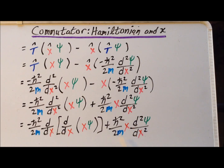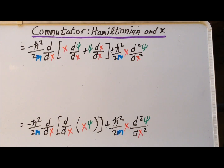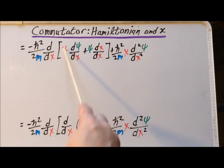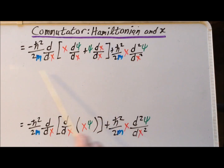We copy down the right-most term unchanged. On the left-hand side, we use the fact that the second derivative is the first derivative of the first derivative, writing it as a series of first derivatives. We then apply the product rule to the first derivative of x times ψ: the first function is x, the second is ψ, giving x times dψ/dx plus ψ times dx/dx. We recognize that dx/dx equals one, so we simplify that in the next step.